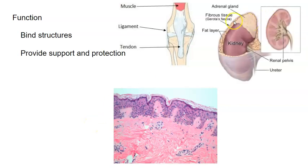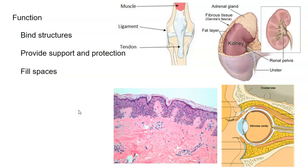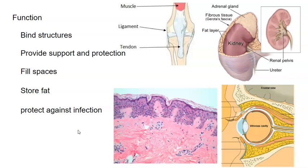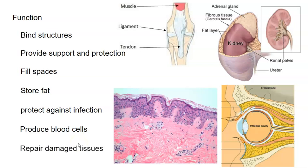Connective tissue also provides protection through fibrous capsules and fat tissue surrounding organs like the kidneys. It fills spaces — even spaces around and behind your eye — and stores fat. It protects against infection through mast cells and macrophages. It produces blood cells in the bone marrow, which we'll discuss later. And it repairs damaged tissues.